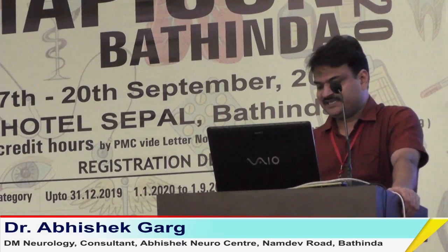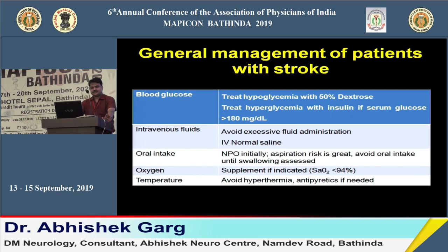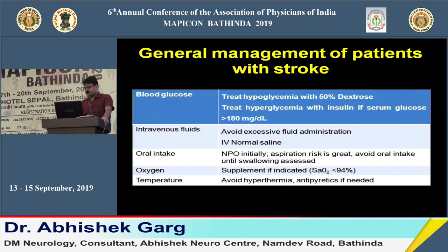For general management of stroke patients: low blood sugar is treated with 50 percent dextrose; high blood sugar is managed with insulin infusion keeping sugar between 140 to 180 mg/dL. IV fluids: normal saline is the fluid of choice. Keep the patient NPO until swallowing is assessed. Supplemental oxygen is needed only when saturation is less than 94 percent. Avoid hyperthermia — give antipyretics if the patient has fever.